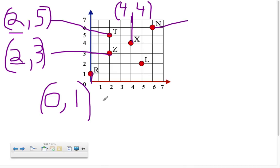How about this N? We have to go over 6. Oh look, up 6. So that means it's going to be (6, 6).